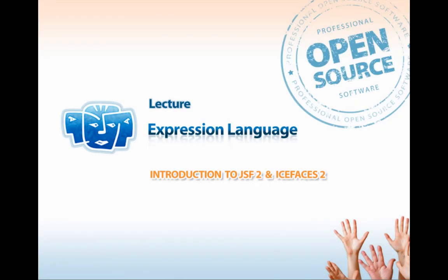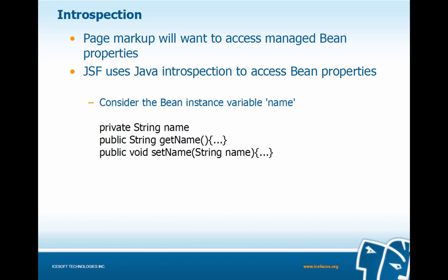The JSF Expression Language. Page markup will want to access managed bean properties. As we learned previously, JSF implements the Model-View-Controller design pattern, so we're going to use expression language to bind our view to the model. In order to access bean properties, JSF uses Java introspection. Consider the bean instance variable name — most importantly, we have a getName and setName call. getName will retrieve the value for name, whereas setName will set that value. These are required by JSF to access bean properties.